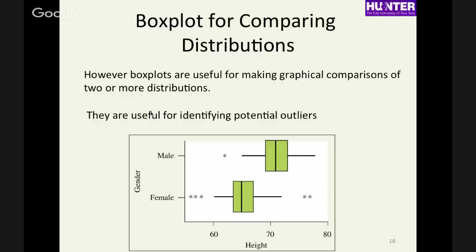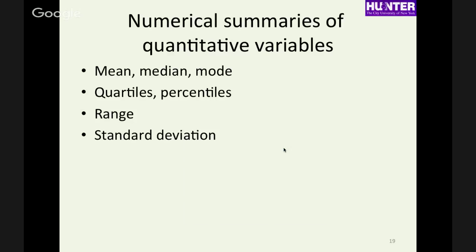You can also put two box plots side by side — for example, height of males and females — to make it very easy to compare distributions between groups. That covers dot plots, histograms, and box plots. Now let's talk about numerical summaries.